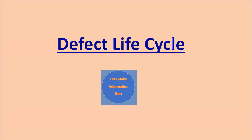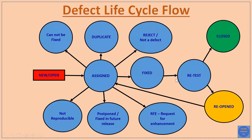Welcome all. Today I'm going to discuss the defect life cycle. Here is the defect life cycle flow diagram, and you can understand it easily as it is self-explanatory. The defect life cycle starts when the tester logs a new bug, and it comes to the state of 'New' or 'Open'. So New and Open is the first stage of the defect.